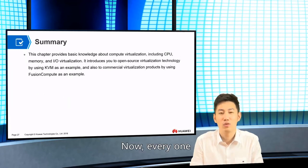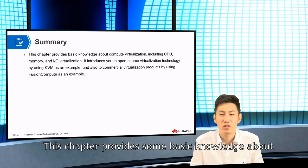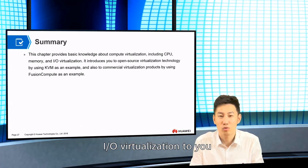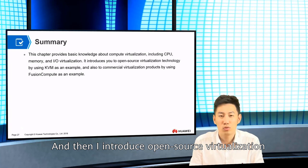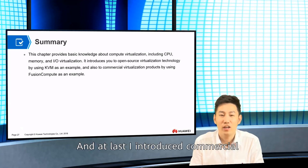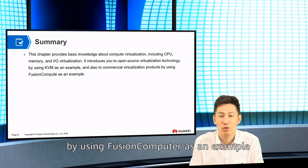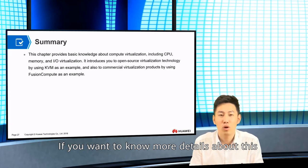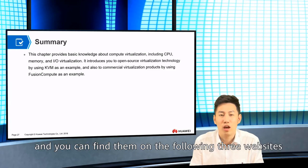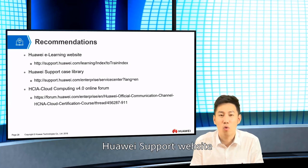Now everyone, let's do a summary. This chapter provides basic knowledge about compute virtualization. I introduced CPU virtualization, memory virtualization, and IO virtualization. I also introduced open source virtualization using KVM as an example, and commercial virtualization using Fusion Compute as an example. If you want to know more details about compute virtualization, you can find them on the following three websites: the Huawei e-learning website, the Huawei support website, and the HCIA computing online forum.